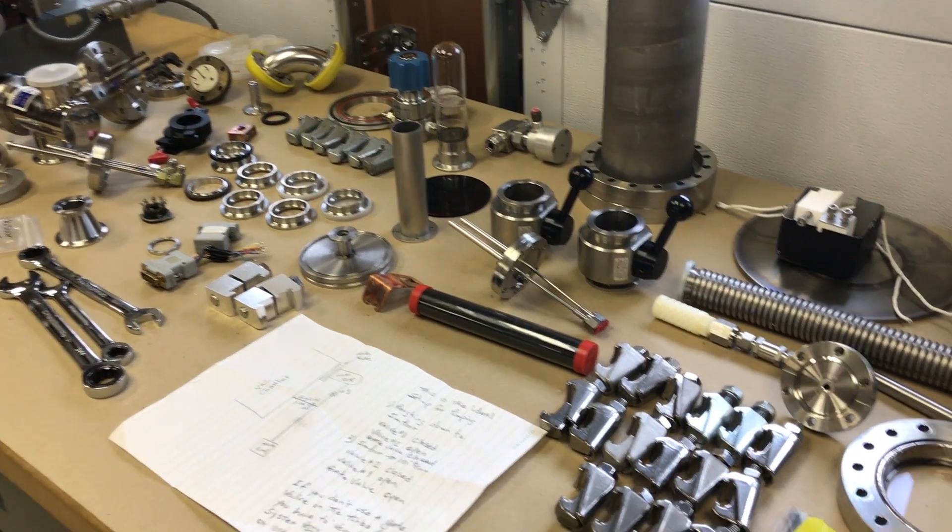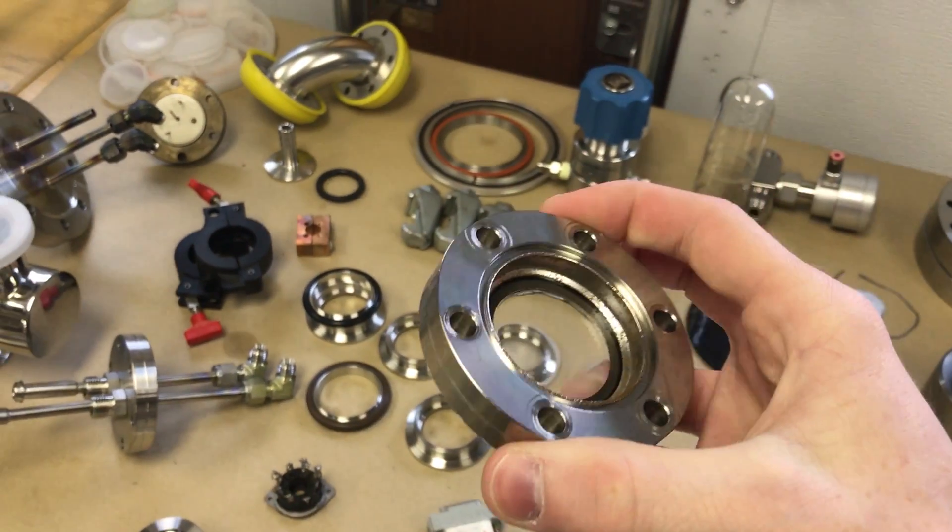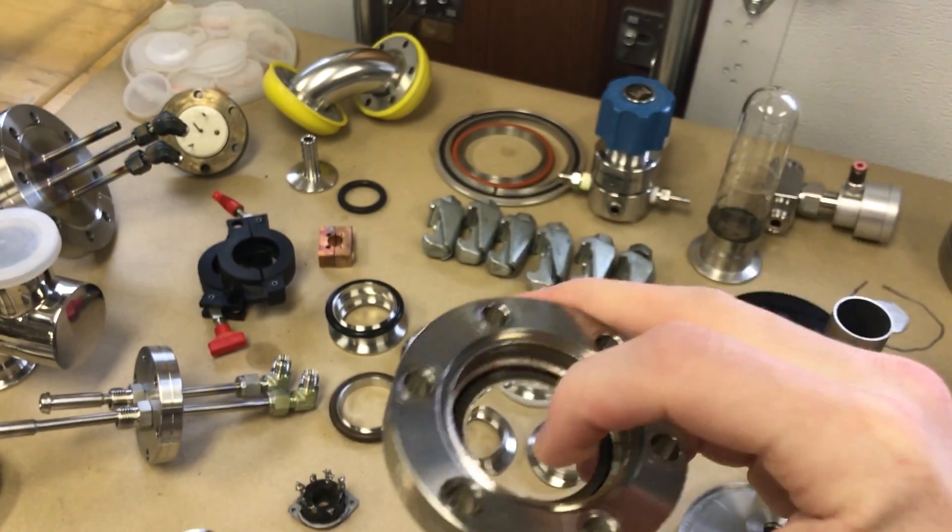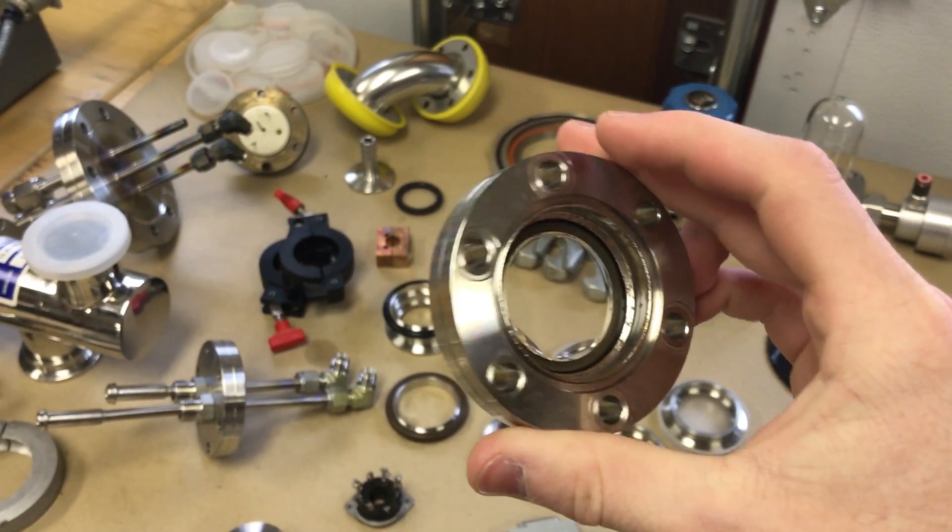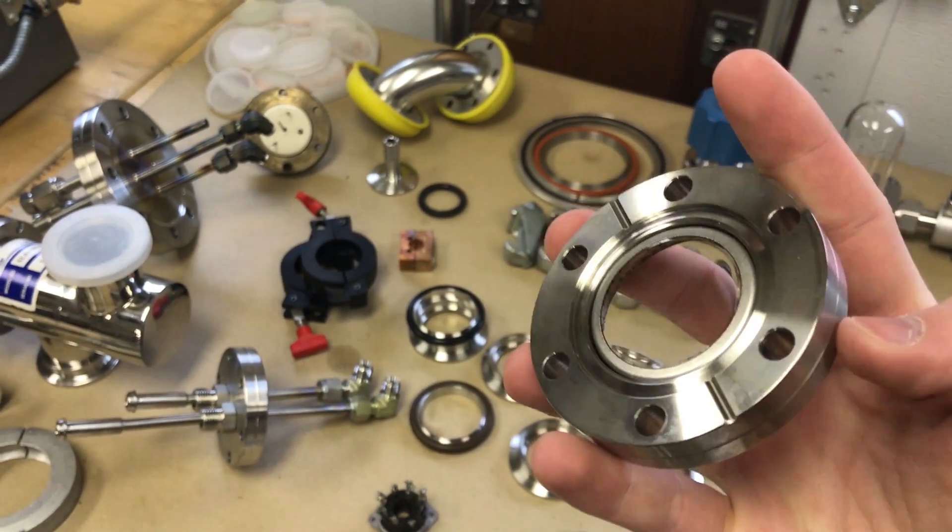Let's talk about flanges real quick. The first type of flange I'm going to talk about is the conflat, otherwise known as CF. This is a 2 ¾ inch CF viewport. It's got glass in it. So you would put this if you have a conflat port on a chamber that you don't have a use for. You're not going to put any instrumentation there or a feed-through.